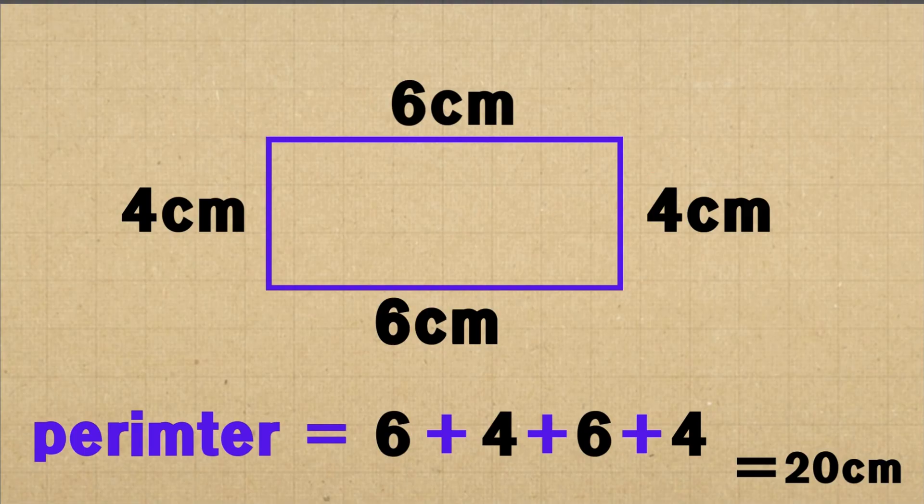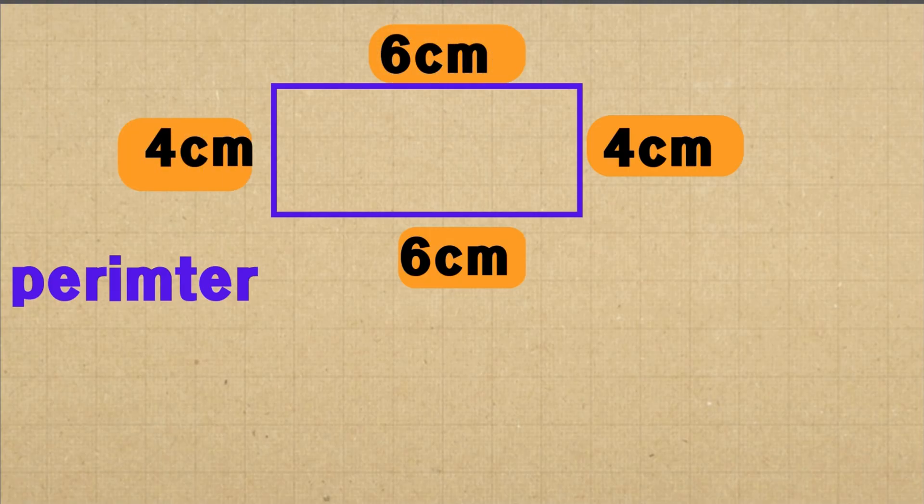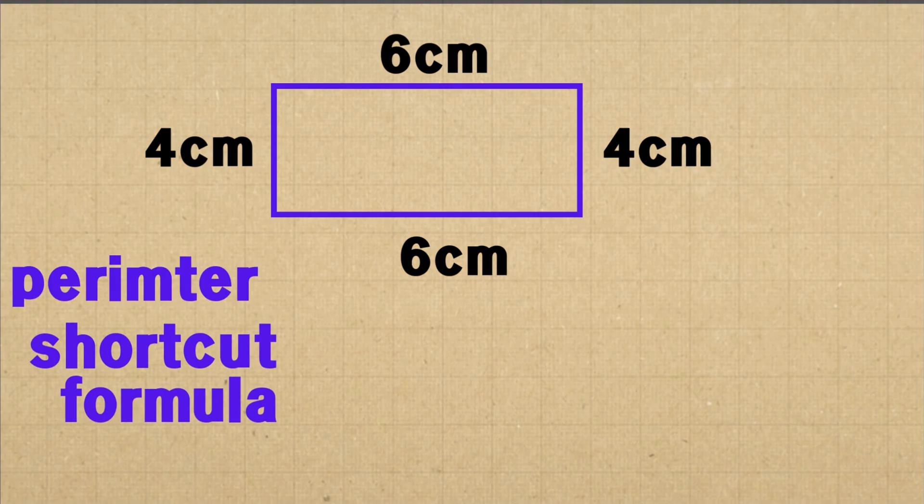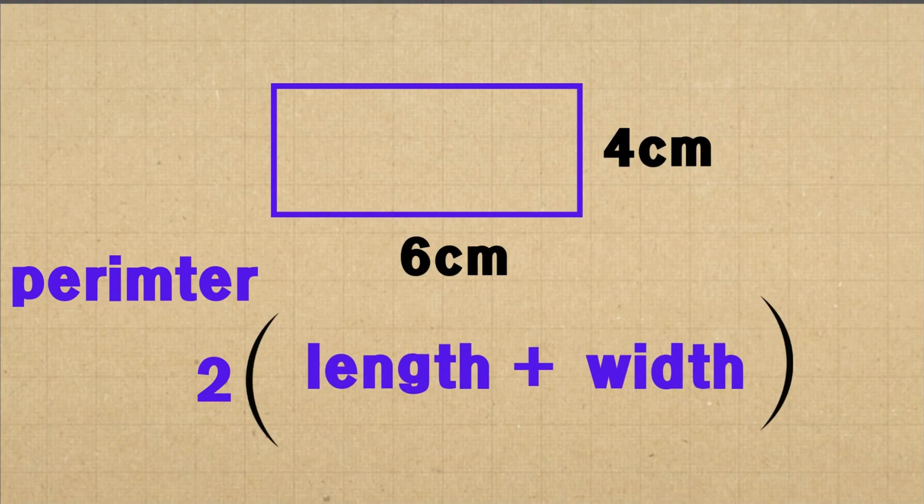One thing to point out is that there is another way to find the perimeter of a rectangle. Instead of adding all 4 sides one by one, we can use a shortcut by applying the perimeter formula for a rectangle. The perimeter of a rectangle is found by multiplying 2 by the sum of its length and width.